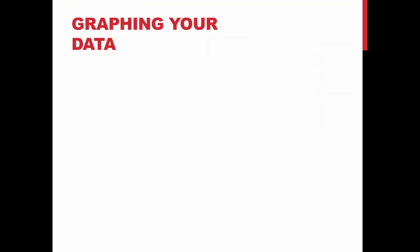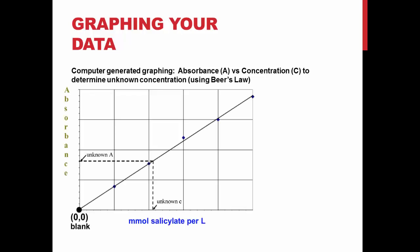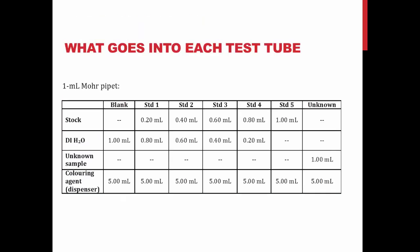Then you will graph your data into a calibration curve. Graph absorbance versus concentration to determine the unknown concentration of your salicylate solution. The graph should look as follows — note that there are a few things wrong with the example graph shown. Be sure to review the 'How to Graph in Excel' video to make sure you have everything you need. With your data, you will be able to find the concentration of your sample based on its absorbance. Here is a summary of what goes into each test tube — make sure you write this down in your data book so you can refer to it during the lab.